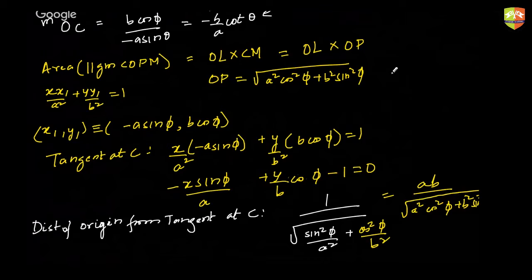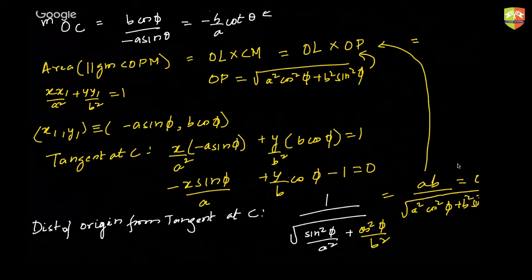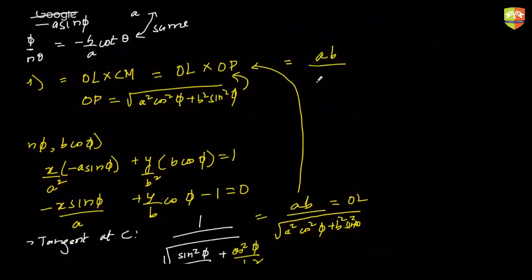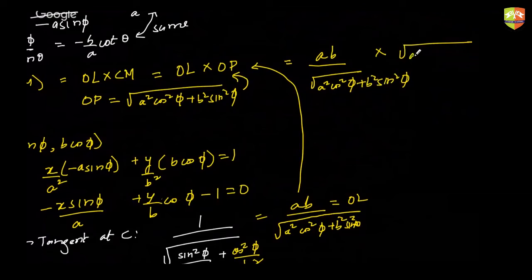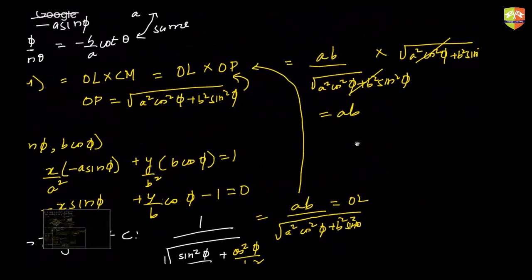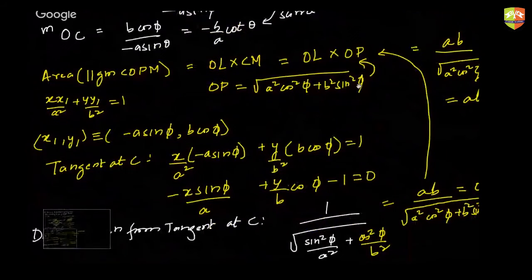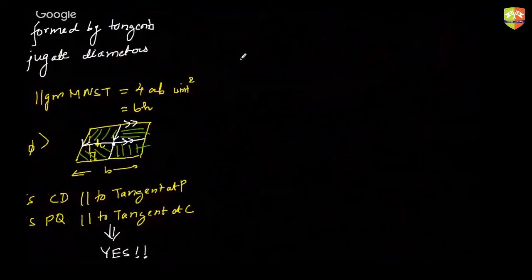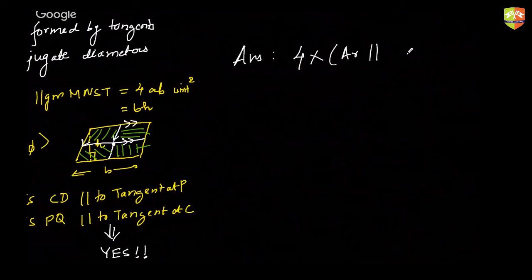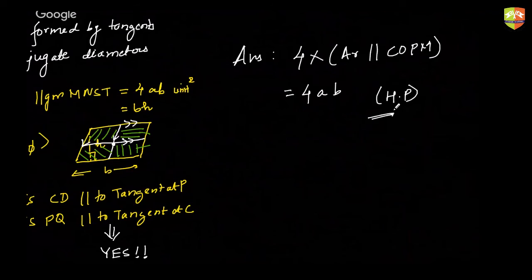Substituting OL and OP into the area formula: area of COPM = OL × OP = [ab / √(a²·cos²φ + b²·sin²φ)] × √(a²·cos²φ + b²·sin²φ) = ab. The terms cancel and the area of COPM is ab. Therefore, the area of the required parallelogram is four times ab, giving 4ab square units. Hence proved.